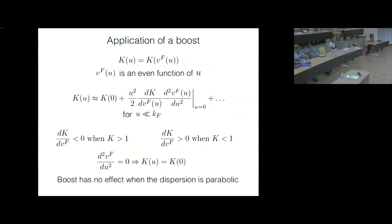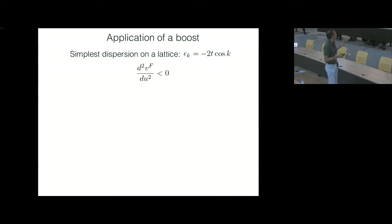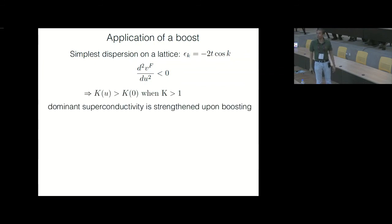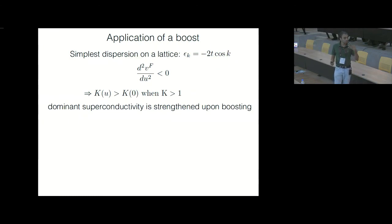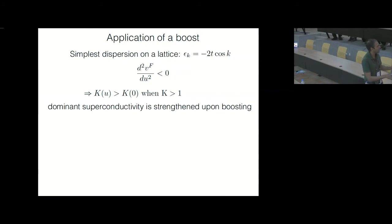But the boost does have a non-trivial effect when you have a lattice and are breaking Galilean invariance. The simplest kind of lattice dispersion in one dimension comes from a one-dimensional tight-binding model, which has a dispersion like -2t cos(k). It can be shown that for this kind of dispersion, the second derivative is not zero — and not only is it not zero, it is actually negative. So k(u), the boosted Luttinger parameter, is actually greater than the unboosted Luttinger parameter if the unboosted value was greater than one to begin with.